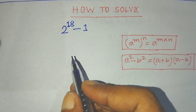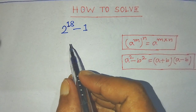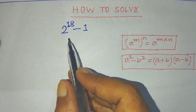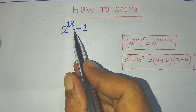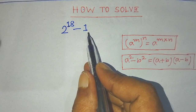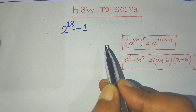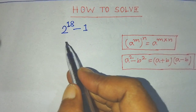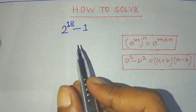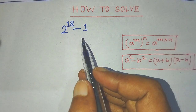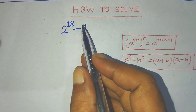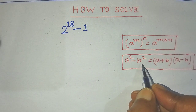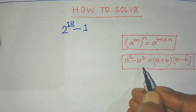Our given exponential form is 2 to the power 18 minus 1. To simplify this exponential form, first of all we have to write this in the form a square minus b square.